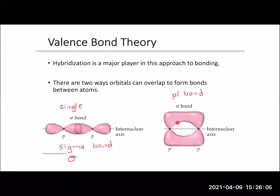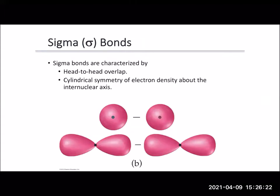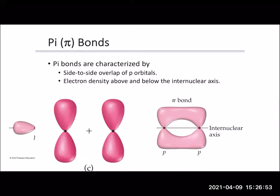Sigma is head-on overlap. A pi bond is where the orbitals are next to each other enough that the electron starts to jump back and forth and be shared. Sigma bonds are characterized by head-to-head overlap — it can be s orbitals, p orbitals, or hybridized orbitals. Pi bonds are side-to-side overlap, which happens when you have two p orbitals next to each other. If they get close enough in space, the electrons will start going back and forth between the two orbitals — that's how we create the pi bond.